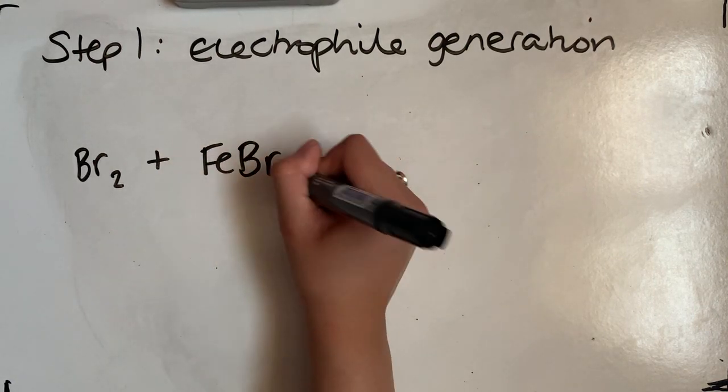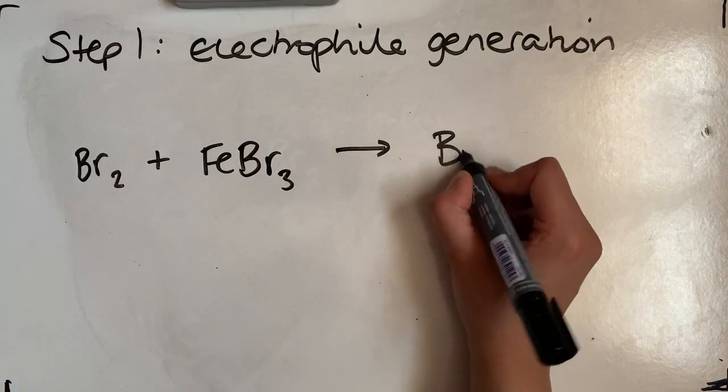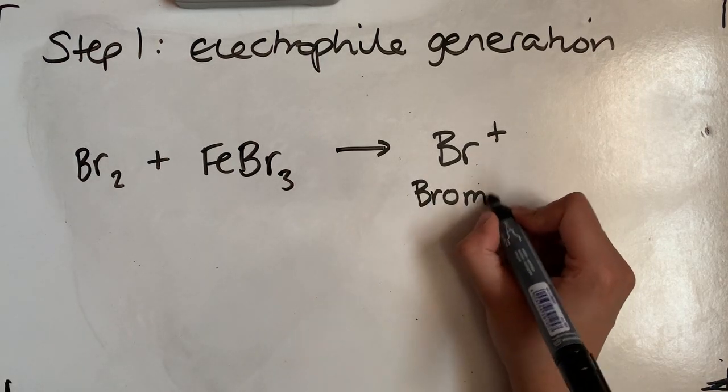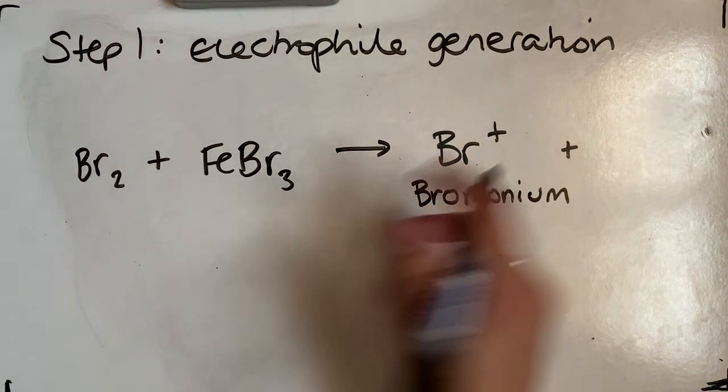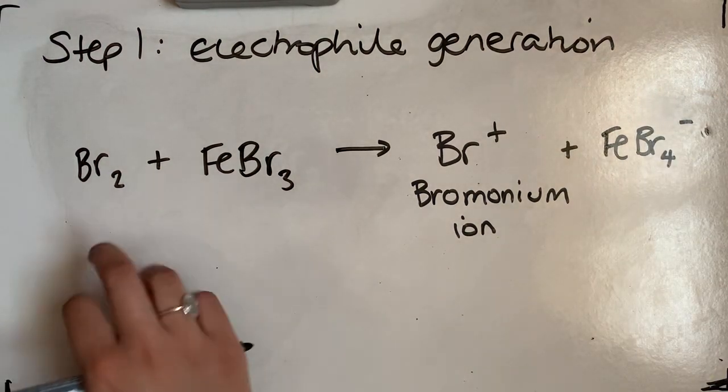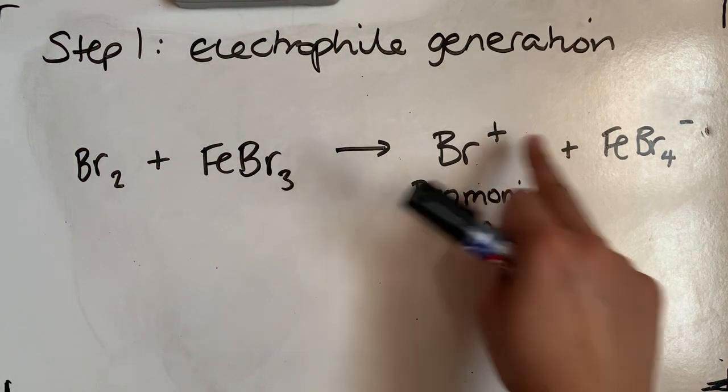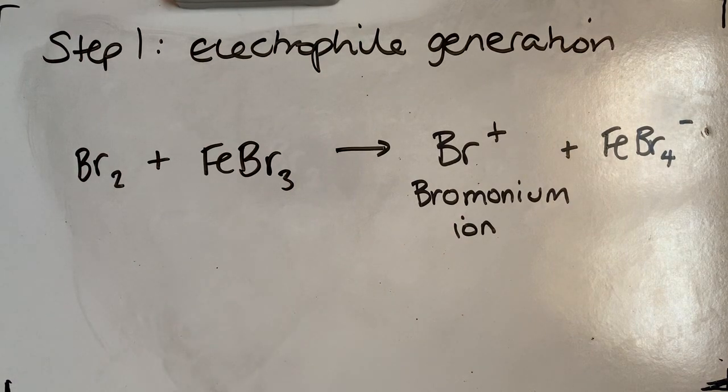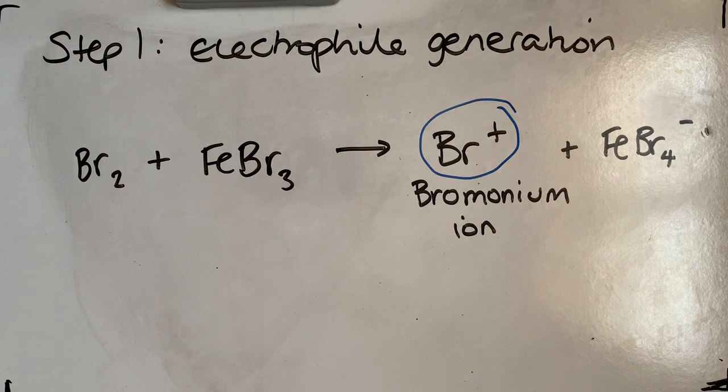So that FeBr3 is going to react with the bromine, and that's going to form Br+, which is what we call our bromonium ion. And it's also going to form FeBr4 minus. One of the bromines has just attached itself to the Br, leaving Br+ and FeBr4 minus, so just be careful of those charges. So this is our electrophile that's now been generated in step one.